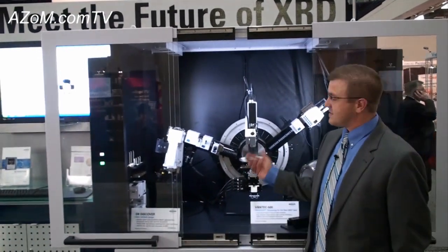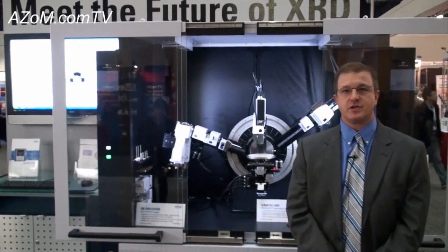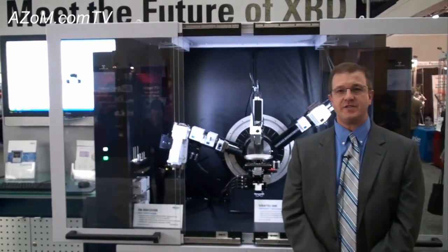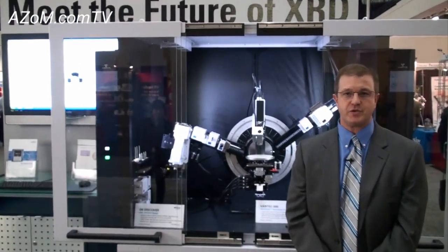The D8 Discover with DaVinci diffractometer is our flagship for materials characterization. It can handle anything from thin film, semiconductor materials, all the way through rocking curves, reciprocal space maps, nanomaterials, and pair distribution functions.